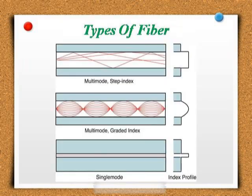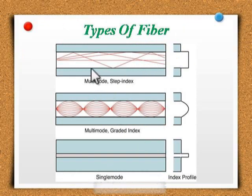Types of fiber. There are two types of fiber: multi-mode and single mode. Multi-mode is capable of carrying multiple beams of light.